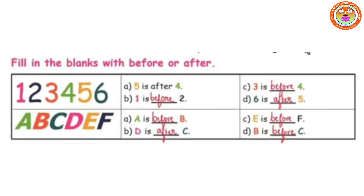Now let us see some exercises related to before and after. Fill in the blanks with before or after. In the first picture, you can see 1, 2, 3, 4, 5, 6. Where is 5? — 5 is after 4. Where is 1? — 1 is before 2.